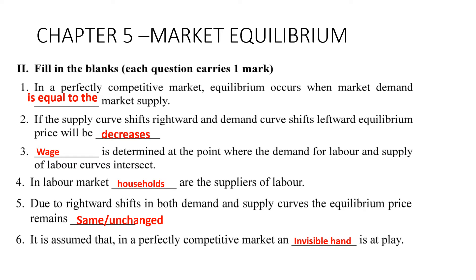Chapter five: market equilibrium. First: in a perfectly competitive market, equilibrium occurs when market demand equals market supply. Second: if the supply curve shifts rightward and the demand curve shifts leftward, the equilibrium price decreases.